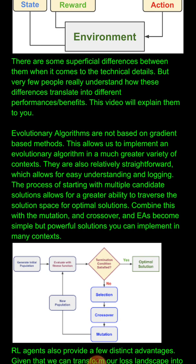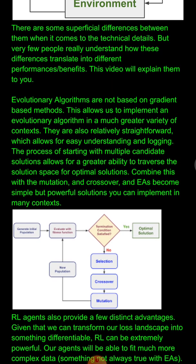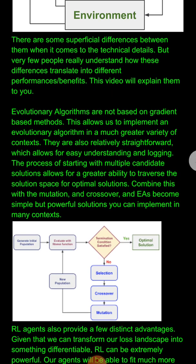Evolutionary algorithms are relatively straightforward to understand, and because they work on iterations, you can easily log things. The process of starting with multiple candidate solutions also means you have a greater ability to traverse the search space and find optimal solutions. If you have only one candidate solution, it can get stuck in a local minimum and not find the global optimum.